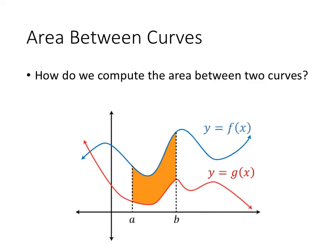So the setup might look something like this. We've got two functions, y equals f of x and y equals g of x, and we've got an area that's bounded between those two curves from some starting point A to some ending point B. And what we want to figure out is the area of that shaded orange region.